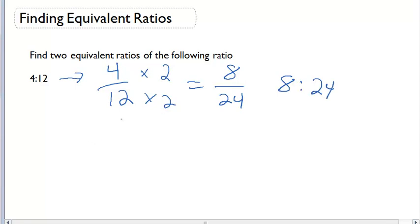We can also go the other way if I want to make this ratio smaller. I have 4 over 12. I could divide each of these by 2. That's going to give me a new fraction of 2 over 6, which I can write as a ratio of 2 to 6.